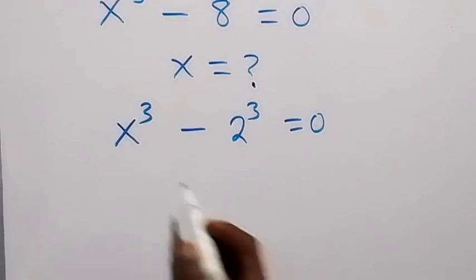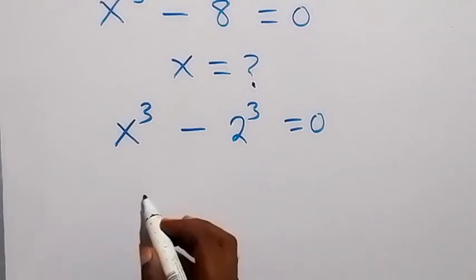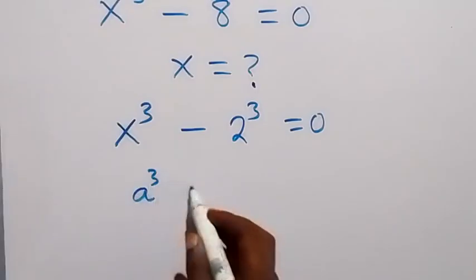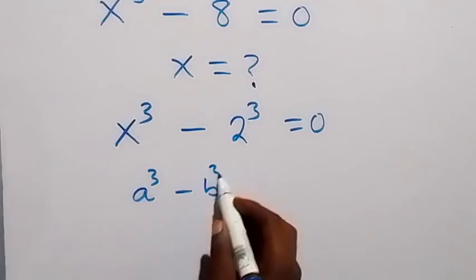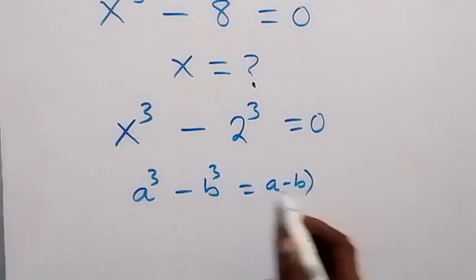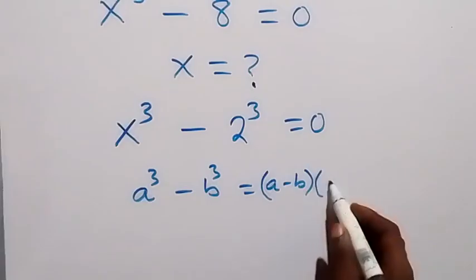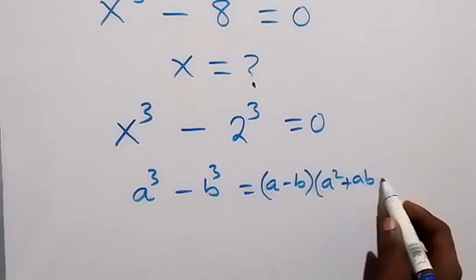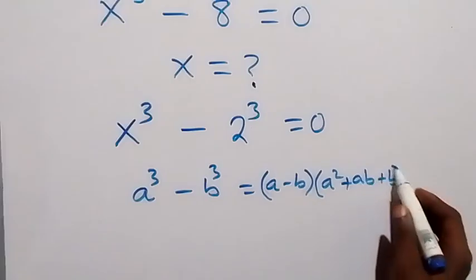Then from here this follows from the difference of two cubes. When we have a cube minus b cube, this can be written as a minus b, then multiply by a square plus ab plus b square.